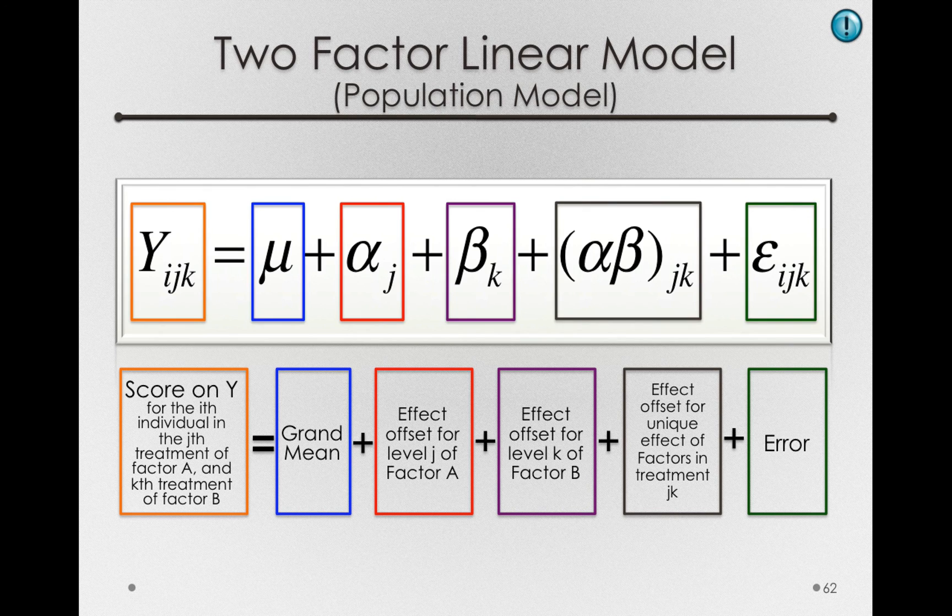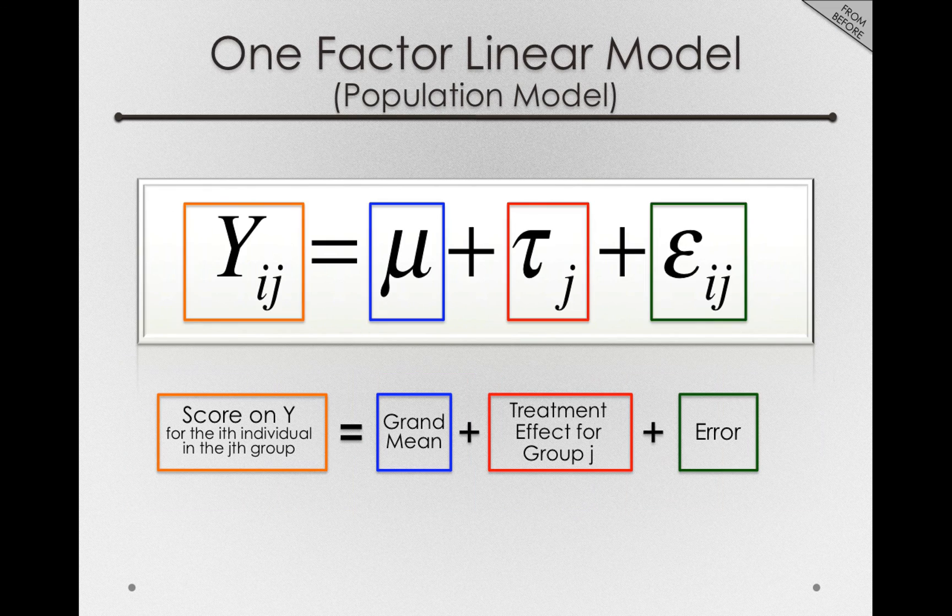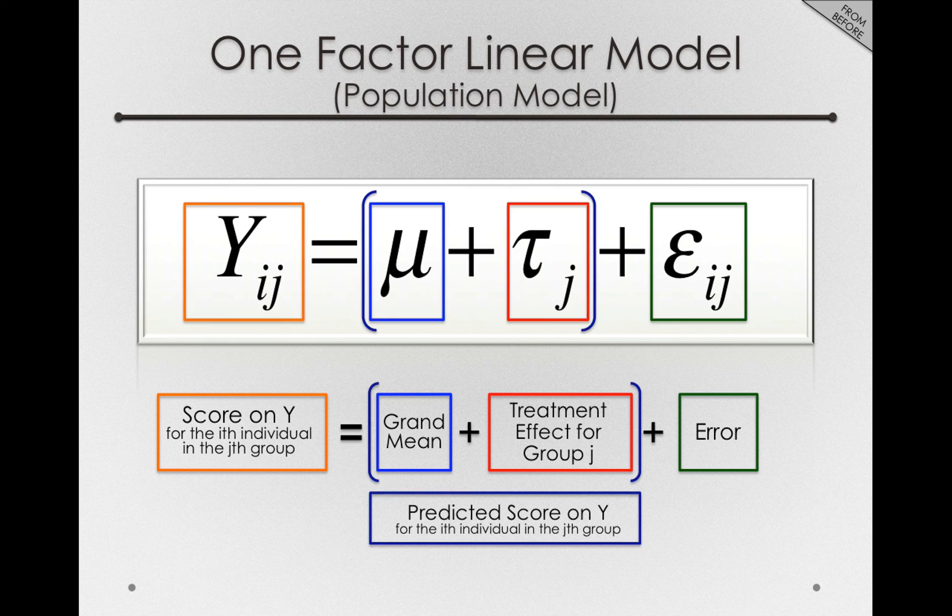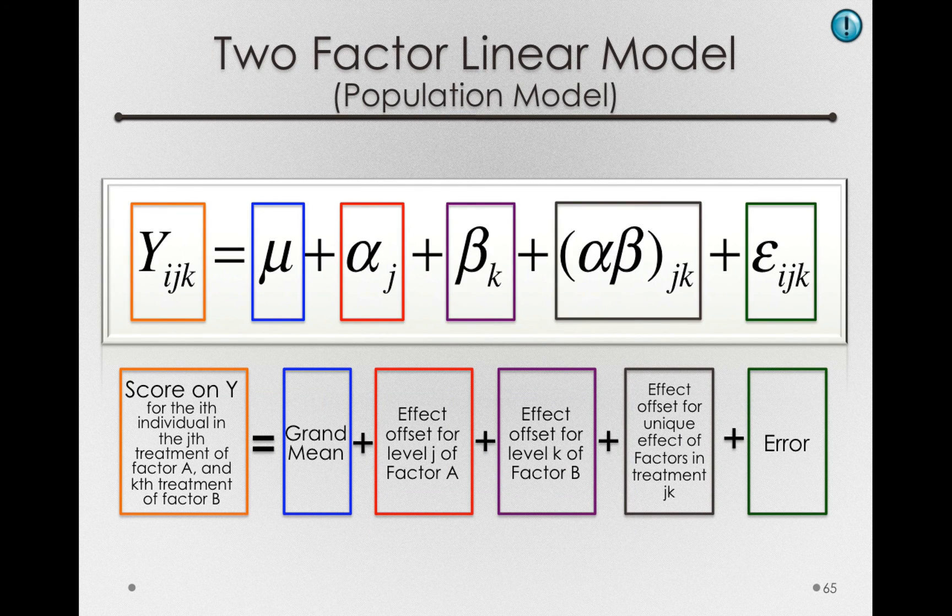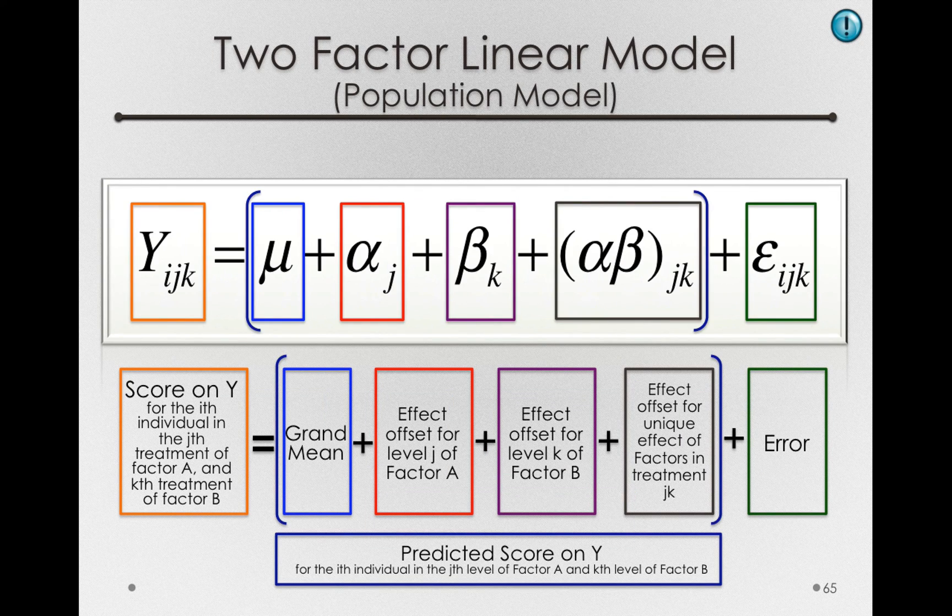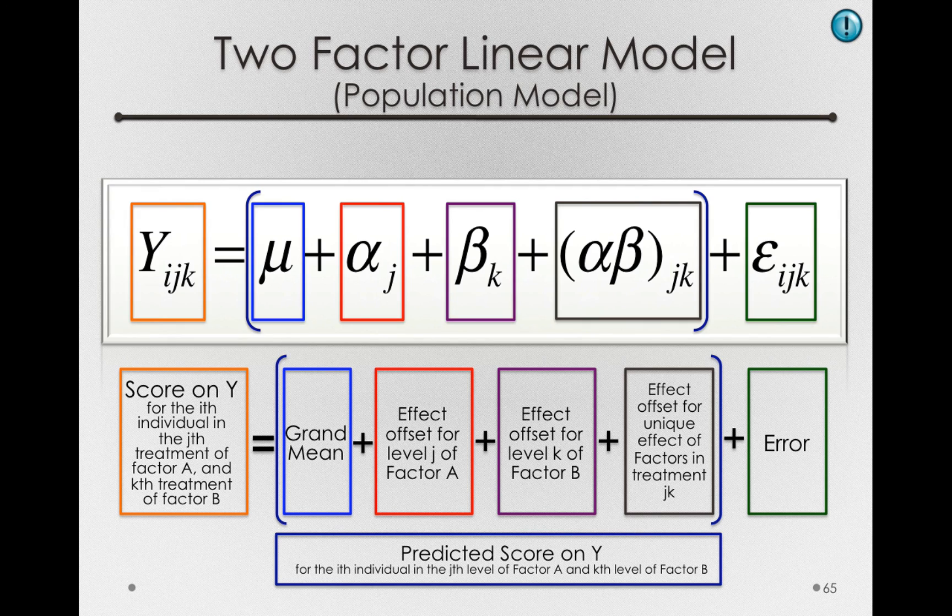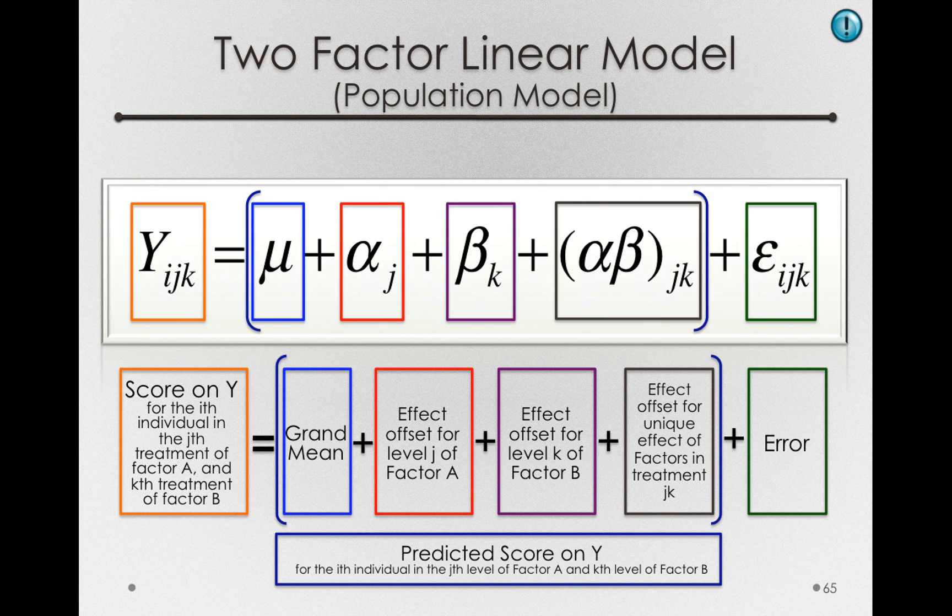So here is our two-factor linear model. And just like our one-factor linear model in which the interior portion formed some prediction or some mean for individuals, so too is the case in our two-factor model. The interior portion, excluding error, is really just the predicted score on y for the ith individual in the jth level of factor A and the kth level of factor B.